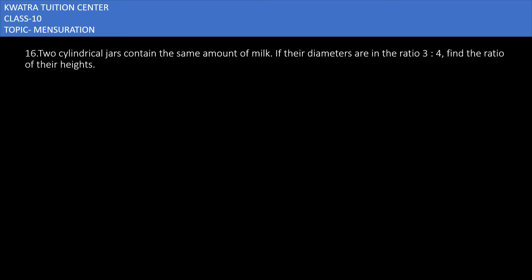Height ka ratio nikaal na. So first, diameter ka ratio is already given, which is 3:4. Let's say we have d1 over d2 equals 3:4. You can convert d1 to 2r1 and d2 to 2r2, which equals 3:4. You can cancel 2 with 2, so the ratio of radius is also the same, that is 3:4.